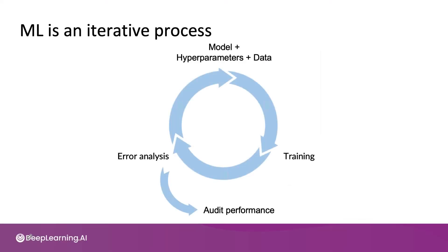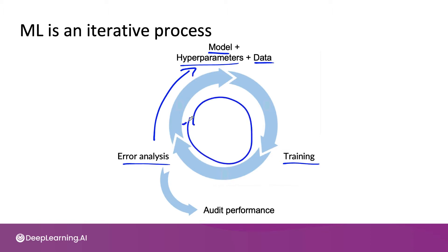We've talked about how machine learning is an iterative process where you start with a model, data, hyperparameters, create a model, carry out error analysis, and then use that to drive further improvements. After you've done this a few times and gone around the loop enough times, when you have a good enough model, you might then carry out a final performance audit before taking it to production.